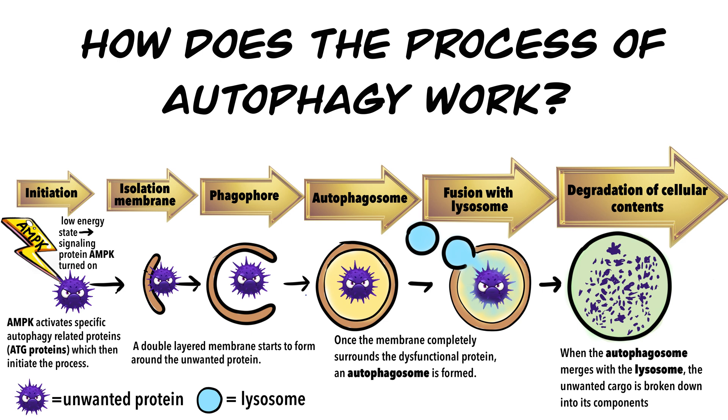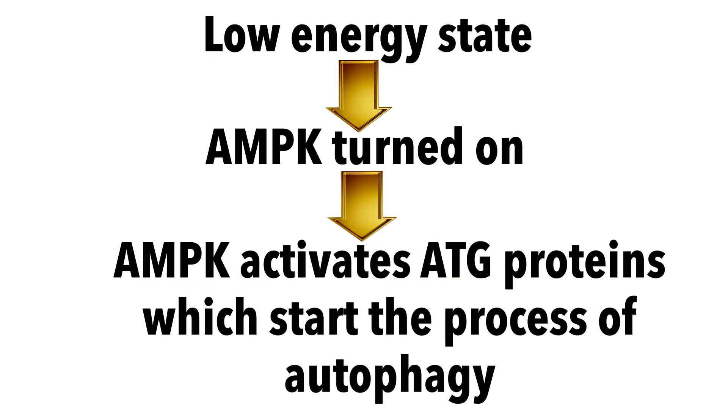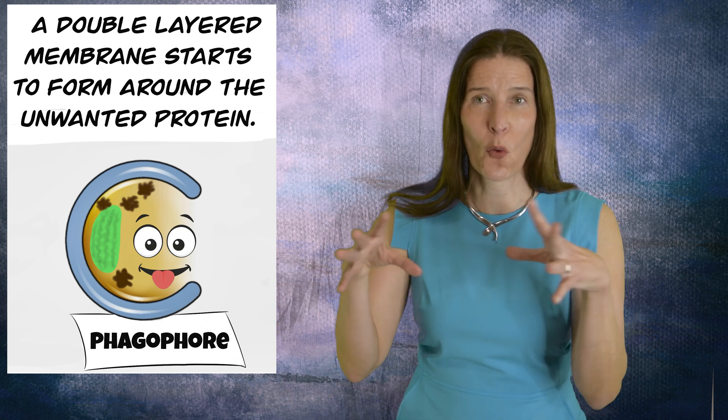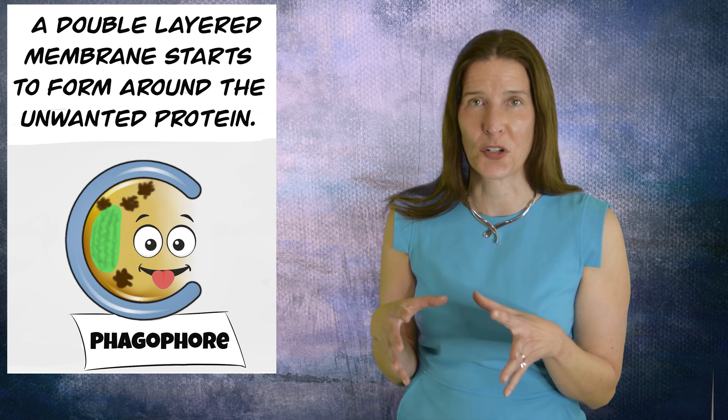First, in a low energy state, signaling proteins such as AMPK are turned on. AMPK activates specific autophagy-related proteins called ATG proteins, which then initiate the process. A double-layered membrane starts to form around the unwanted protein.